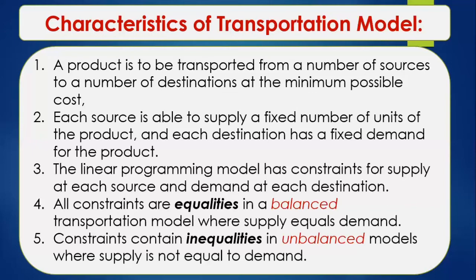The third characteristic is that the linear programming model has constraints for supply at each source and demand at each destination. The resources for which the structural constraints are built are not homogeneous — meaning one constraint may relate to machine hours and the next may relate to man hours, etc.